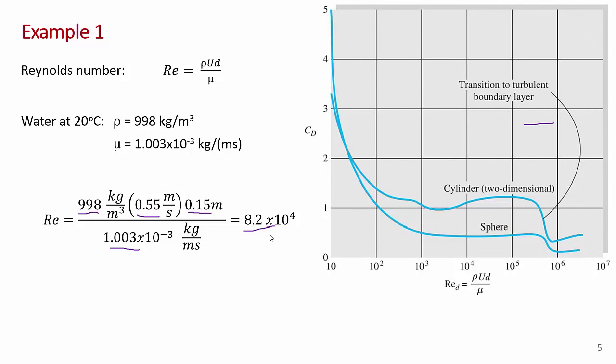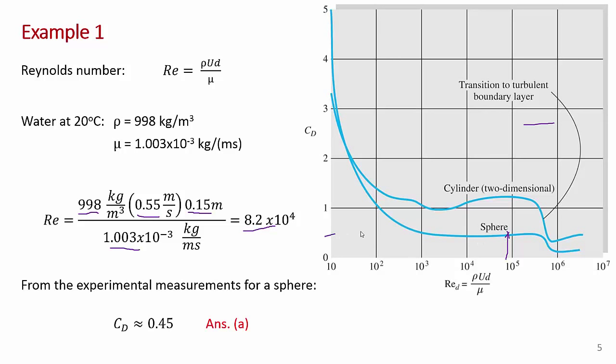Going back to the figure showing experimental data of drag coefficient versus Reynolds number, on the log scale 8×10⁴ falls in a certain region. Reading across visually from that point on the sphere curve, the drag coefficient at a Reynolds number of 8.2×10⁴ is about 0.45. That's the answer to part a.